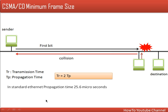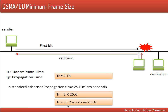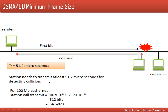Using standard values: in standard Ethernet, the propagation time is 25.6 microseconds. Putting this value into the formula gives a transmission time of 51.2 microseconds. For 100 Mbps Ethernet, the number of bits transmitted in 51.2 microseconds is 512 bits, which equals 64 bytes. So the minimum frame size used in CSMA/CD is 64 bytes.